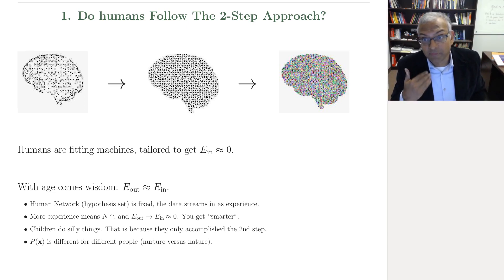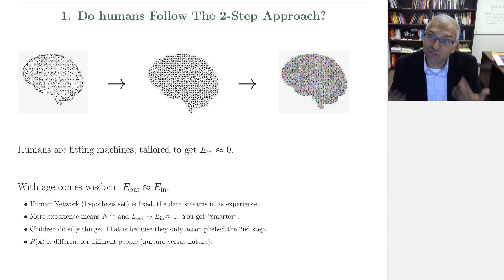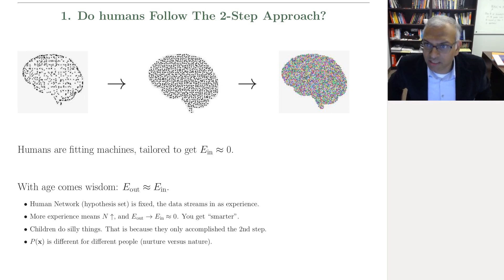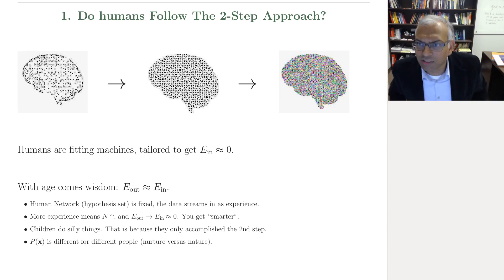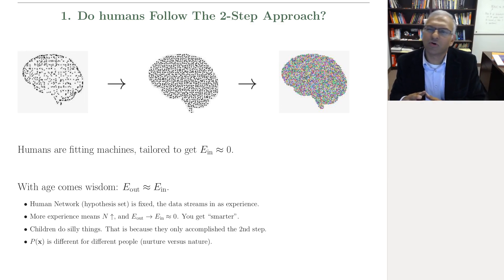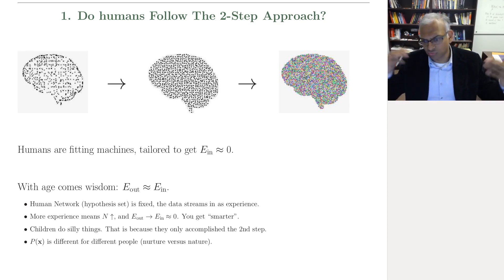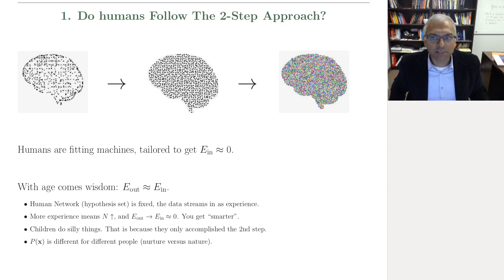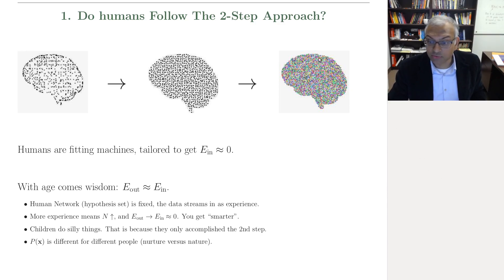In fact, humans have the benefit that once you learn to read, you vastly accelerate the rate at which you put data into your brain and reconfigure your neural network — because you can learn from the experience of all kinds of other people through what you read. You can learn from the experiences of all people in history through what was written and said, so you can rapidly improve your E_in to E_out — the first step in learning. So humans do indirectly do two-step learning.